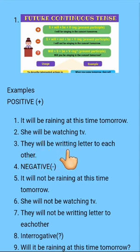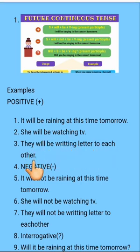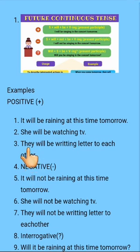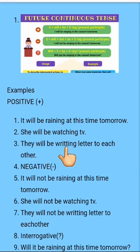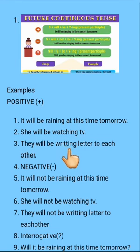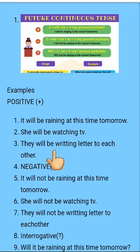They will be writing letter to each other. Ik dousre noo patar likh rahe hoange. Plural hai, still ashi will use kita hai de naal, phir is the naal be aajayega, verb di first form hai. Us the naal ashi ing use kita hai, then object aagya.